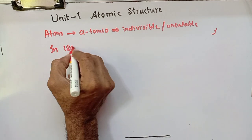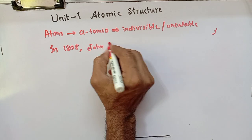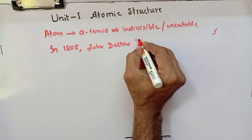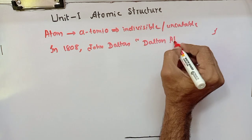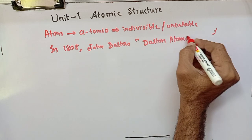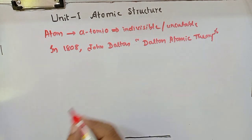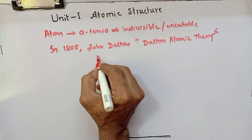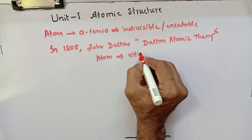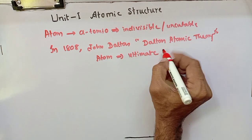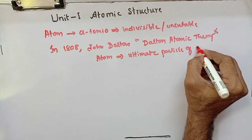In 1808, John Dalton proposed his theory known as Dalton's atomic theory to explain the atomic structure. According to this theory, an atom is considered as an ultimate particle of matter.